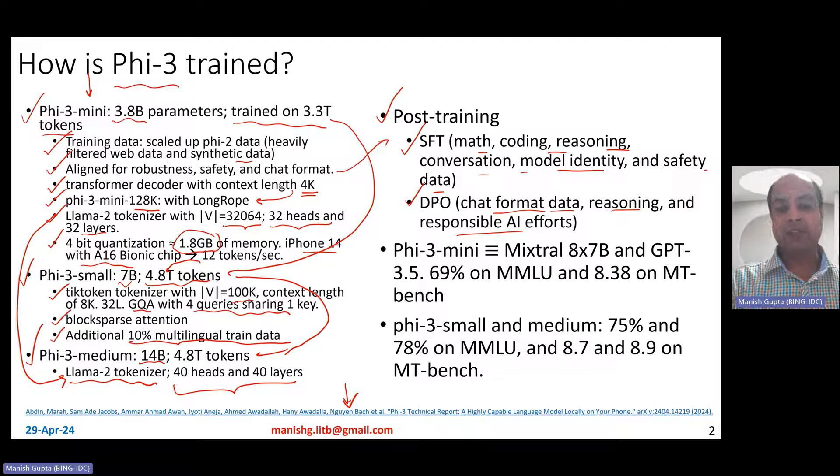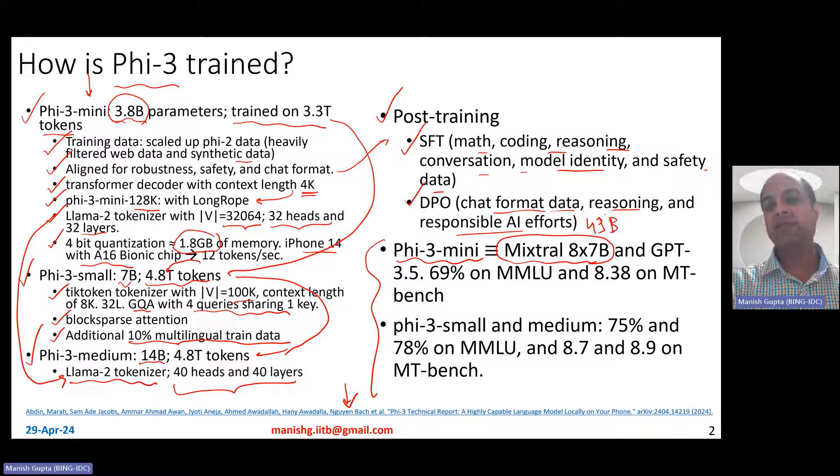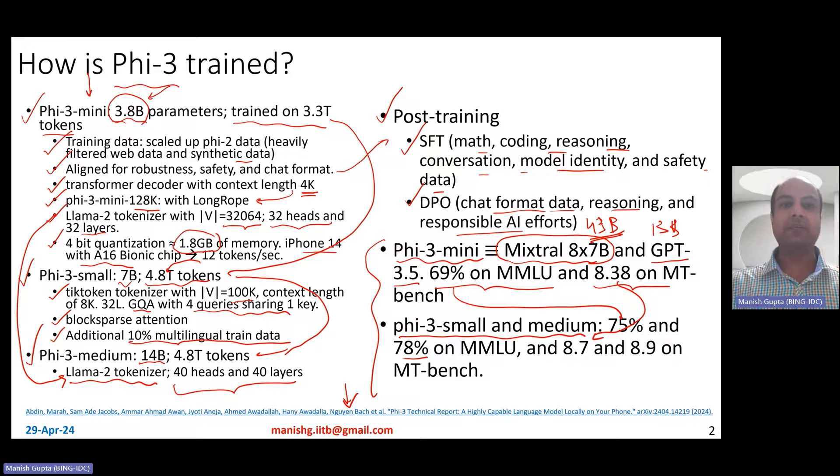Now, from a performance perspective, how does it perform? Phi-3 mini is actually equivalent to Mixtral 8x7 billion parameters, although Phi-3 mini is just 3.8 billion parameters, while Mixtral 8x7 is around 43 billion parameters. It is also equivalent to GPT-3.5. It obtains about 69% on MMLU and 8.38 on MT-bench. Phi-3 small and medium basically improve on Phi-3 mini. So 69 becomes 75 and 78, while 8.38 becomes 8.7 and 8.9 on MT-bench.